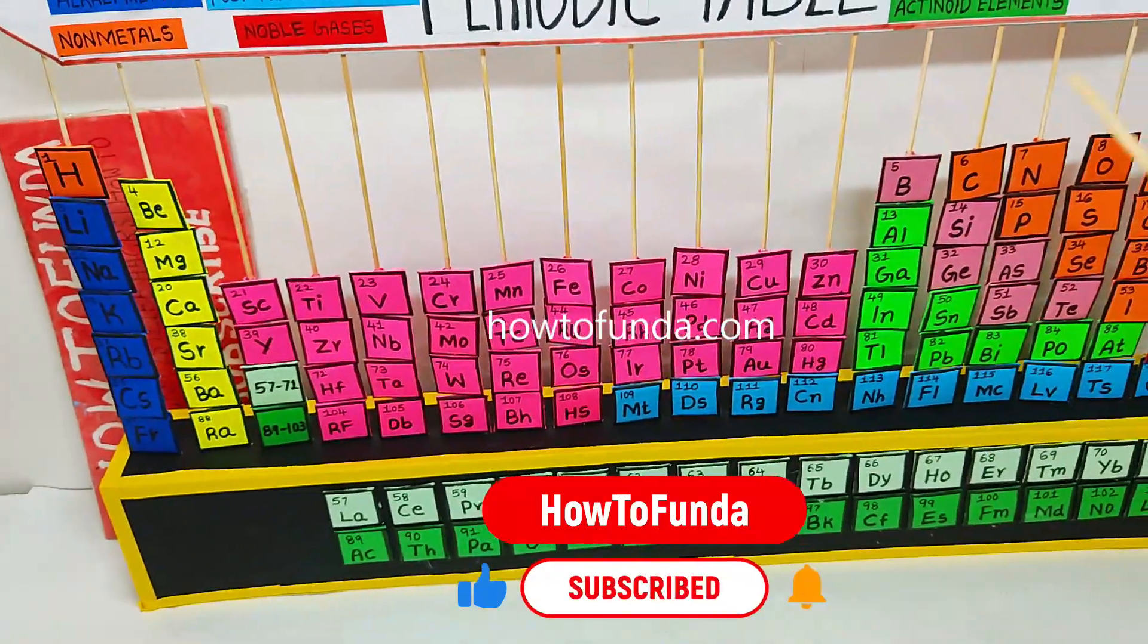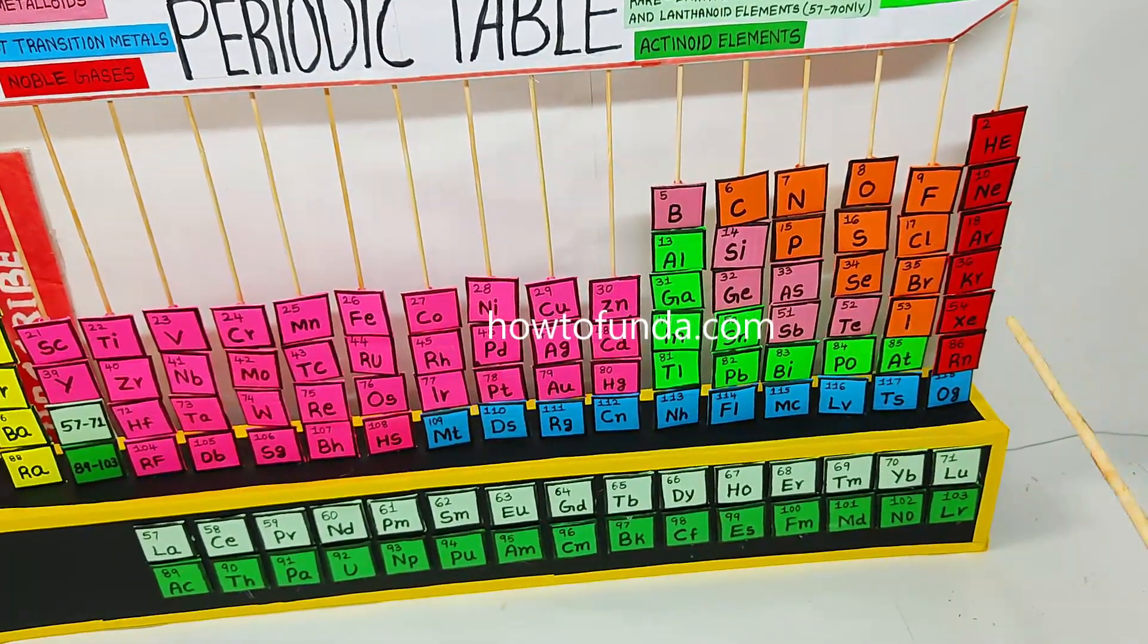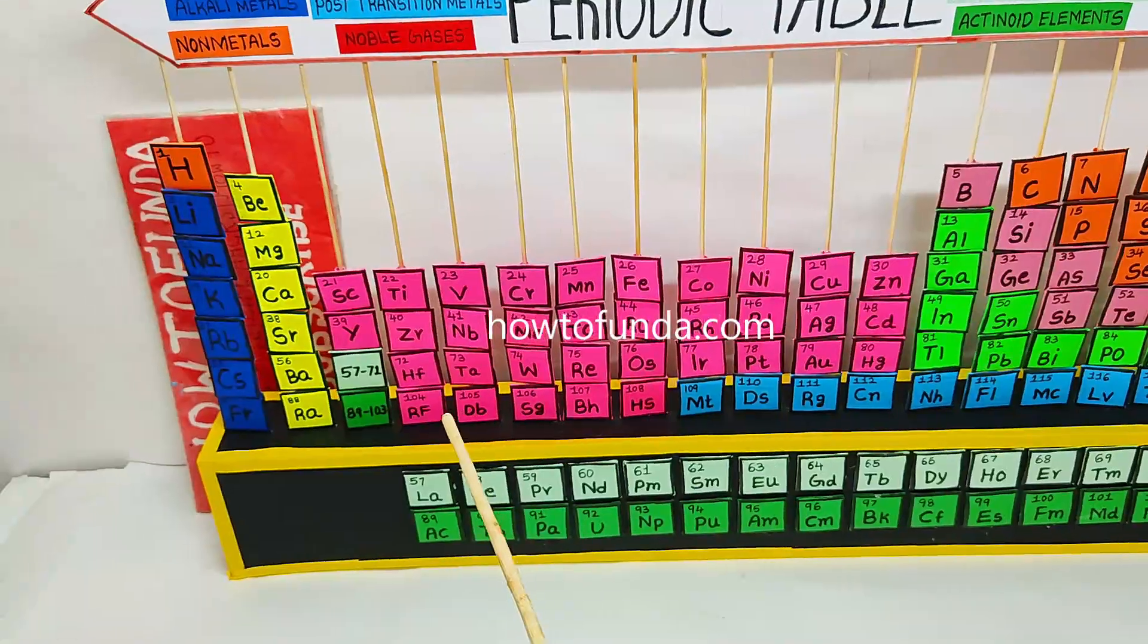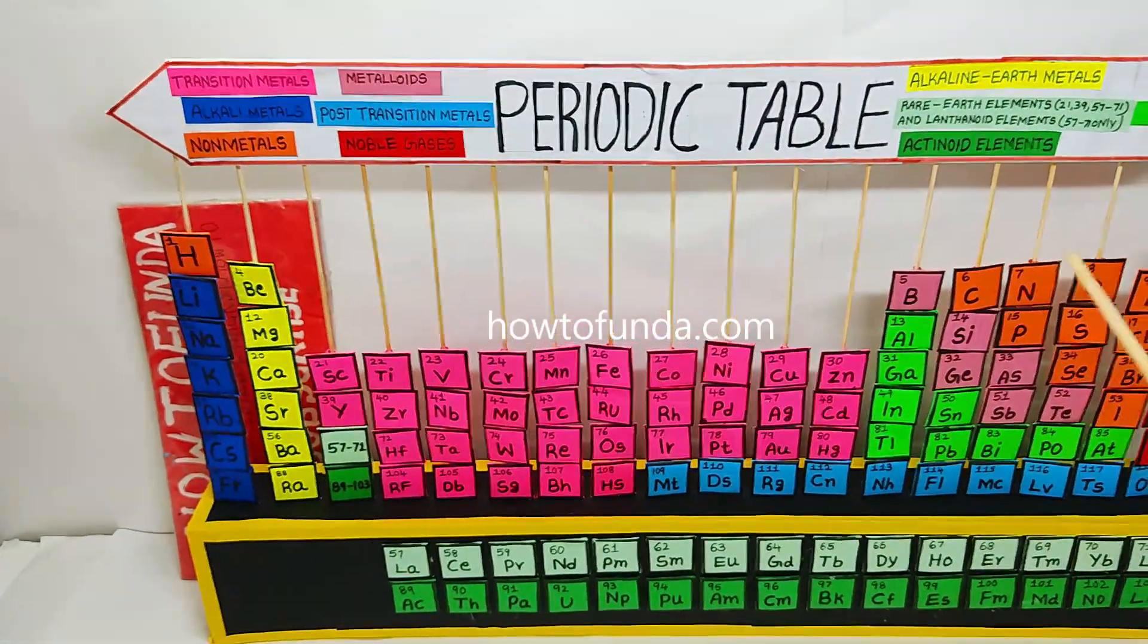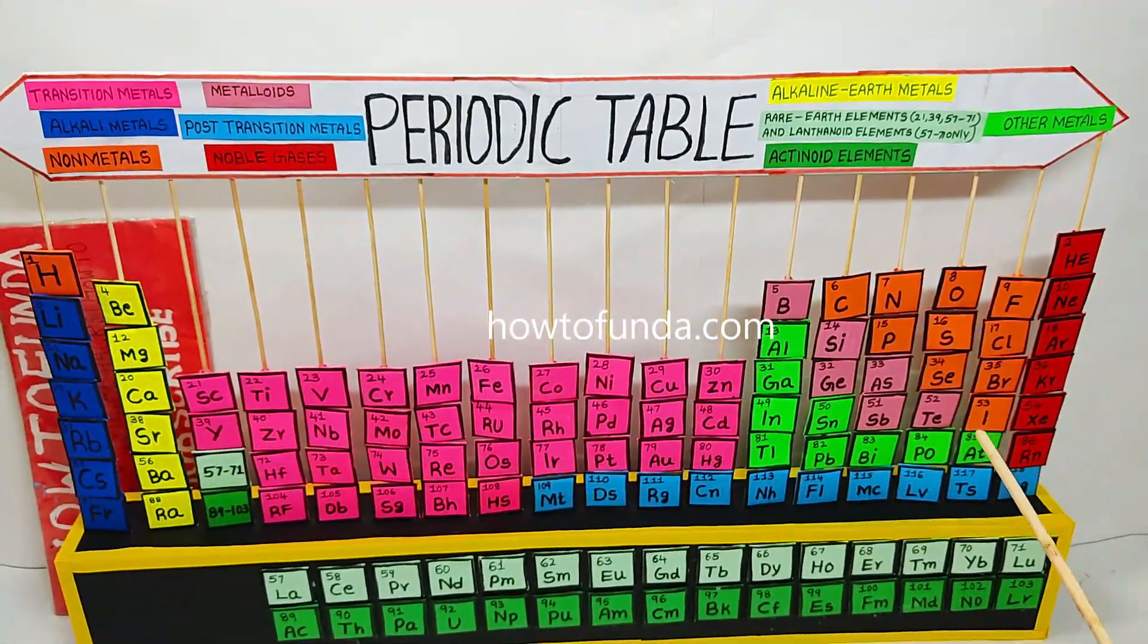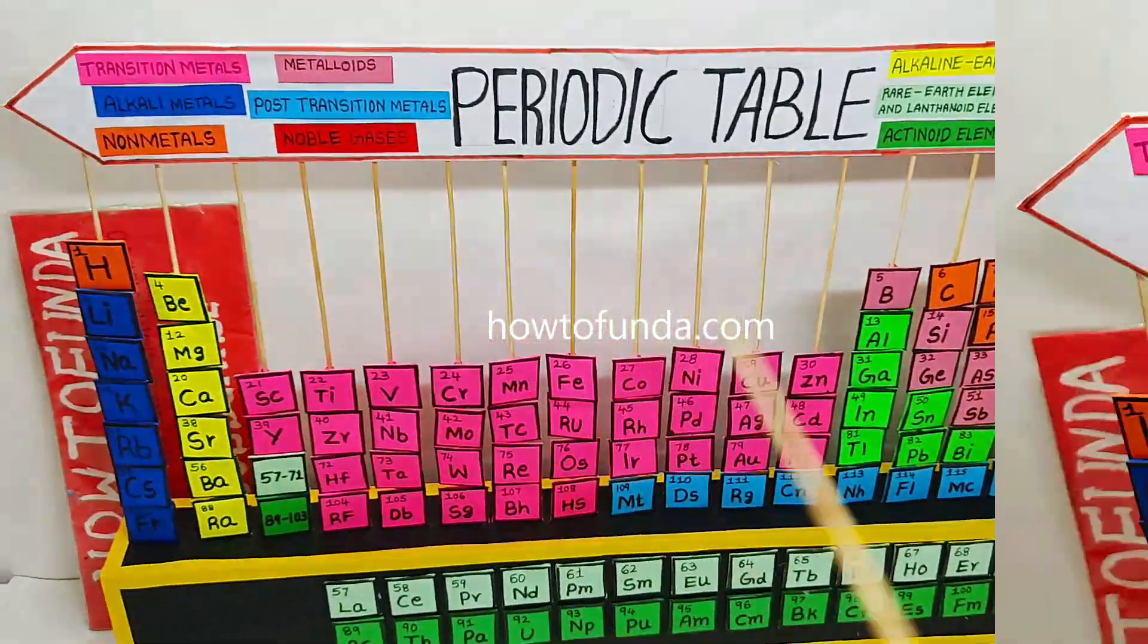In the horizontal rows there are seven periods. You can see each period represents a new electron shell, and each of these models is represented in a different color that I am going to explain.